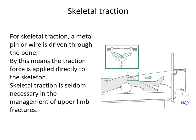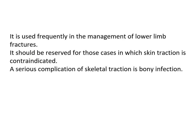In skeletal traction, a metal pin or wire is driven through the bone, so the traction force is applied directly to the skeleton. Skeletal traction is seldom necessary for upper limb fractures, as less force is required there; it is used frequently in the management of lower limb fractures. It should be reserved for cases in which skin traction is contraindicated. A very serious complication of skeletal traction is bony infection, so it is used only when required.